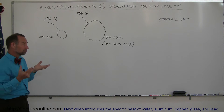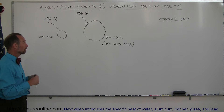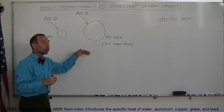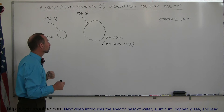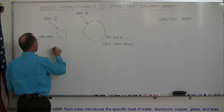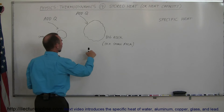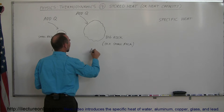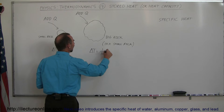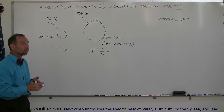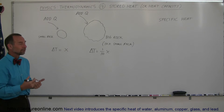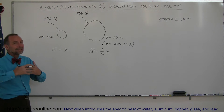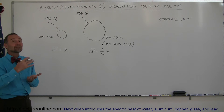Both rocks will have a temperature increase — that should be straightforward. But since the big rock is ten times as big as the small rock, the temperature increase for the big rock will only be one-tenth as much. So if delta T for the small rock is X, then delta T for the big rock will be one-tenth X, because there's ten times as much material to hold heat. The bigger the rock, the more heat it can store without a significant temperature increase.